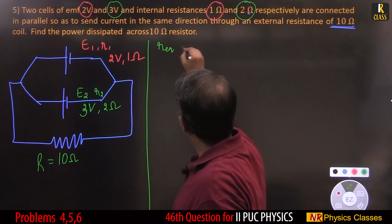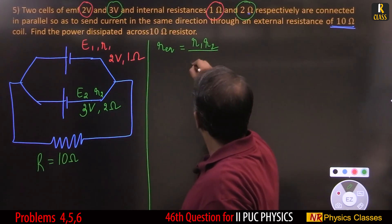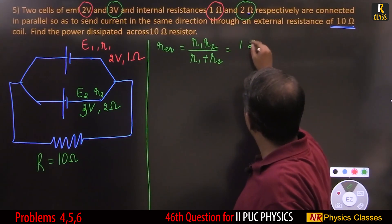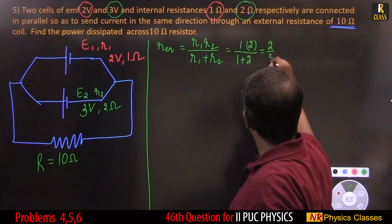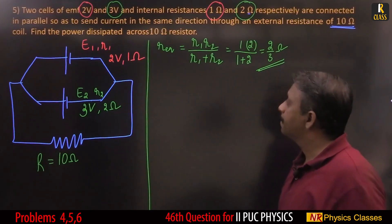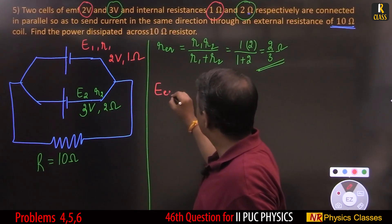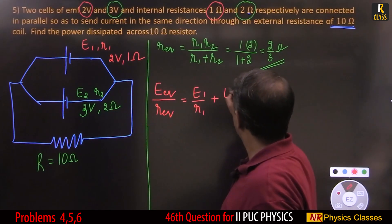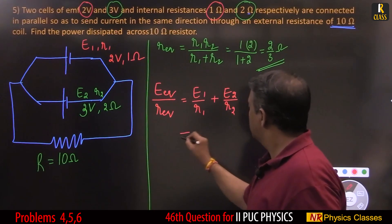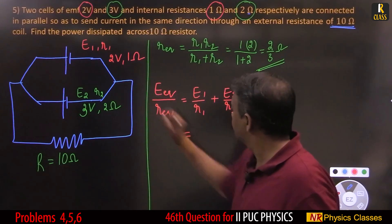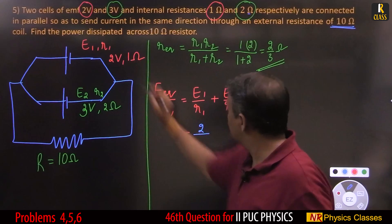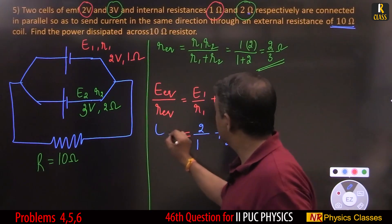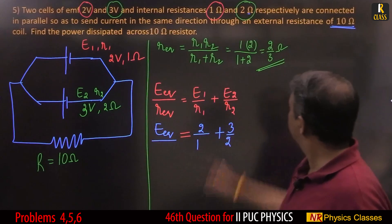R equivalent equals R1·R2 by R1 plus R2. That's 1 into 2 by 1 plus 2, equal to 2 by 3 ohm. Now EMF, E equivalent by R equivalent equals E1 by R1 plus E2 by R2. That's 2 by 1 plus 3 by 2. This is E equivalent by R equivalent which is 2 by 3.